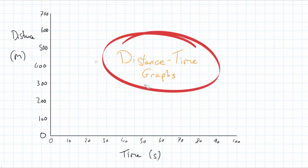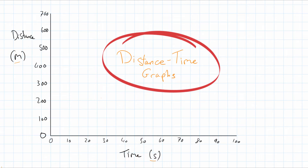On a distance-time graph, we have distance on the y-axis and time on the x-axis. I've already labeled the axes: meters for distance and seconds for time. That means if we're looking at speed, we'll be looking at meters per second. The units are always going to be related — so for a car doing kilometers per hour, we'd label our axes with kilometers and hours.